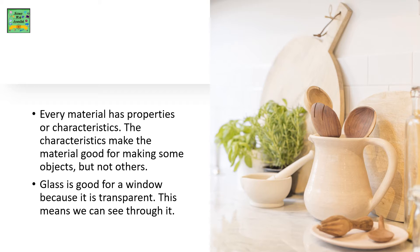Every material has properties or characteristics. The characteristics make the material good for making some objects but not others. Glass is good for a window because it is transparent — this means we can see through it.